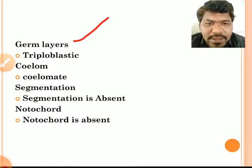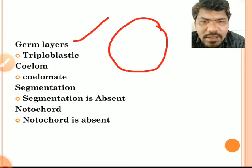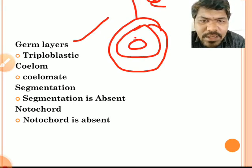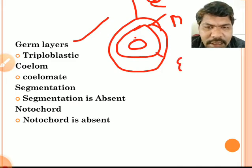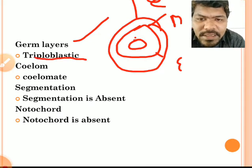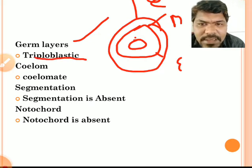Hemichordates also contain three germ layers in their embryonic stage: ectoderm, middle mesoderm, and inner endoderm. Animals which contain three germ layers in their embryonic stage are called triploblastic animals.